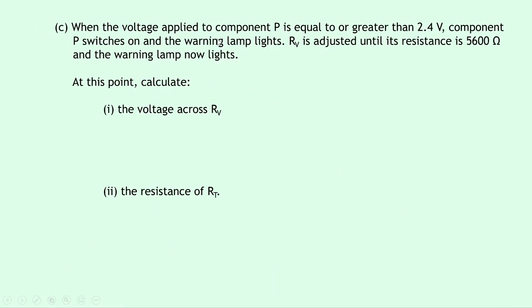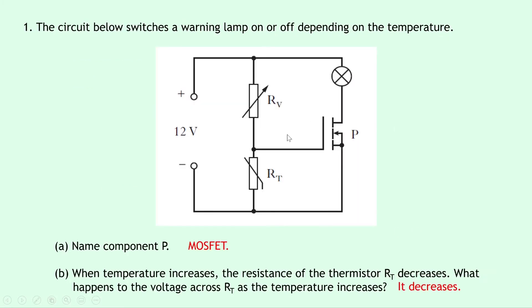Part C says that when the voltage applied to component P is greater to or equal than 2.4 volts, component P switches on and the warning lamp lights. RV is adjusted until its resistance is 5600 ohms and the warning lamp now lights. At this point, calculate the voltage across RV. So we want to find the voltage across the variable resistor when the lamp just lights, and it just lights when the voltage across the thermistor is equal to 2.4 volts. So if we look back at the circuit diagram, we can sort of ignore this stuff on the right hand side for now and just think about the series part of the control circuit.